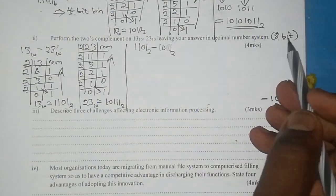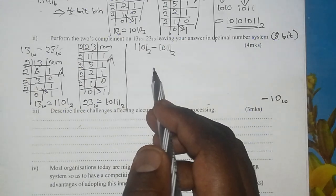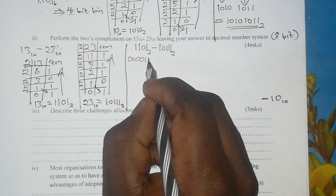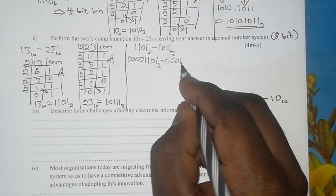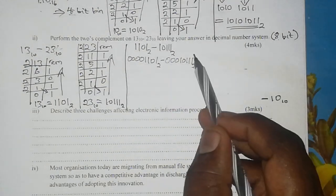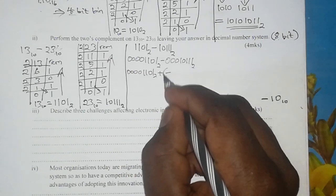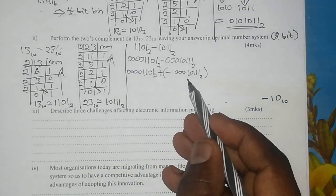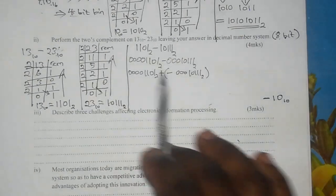The first number has 4 bits, so we need 4 more zeros to make it 8 bits. The negative number has 5 bits, so we need 3 zeros to make it 8 bits. From here going forward, we deal with the negative number. We rewrite the sum as 00001101 plus negative 00010111 base 2. The negative number in brackets is what we are going to convert into its 2's complement version.